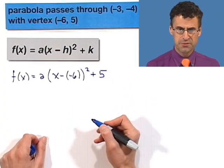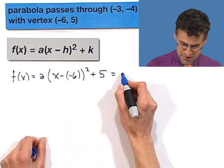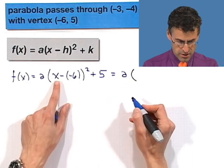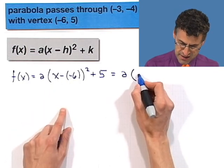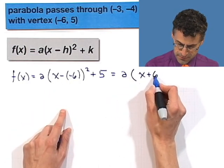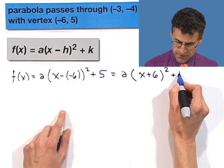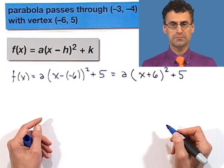Which I'm going to simplify that a little bit if you'll allow me. That's just a times, well, x minus negative, that's just x plus 6 squared plus 5. That's where we are.